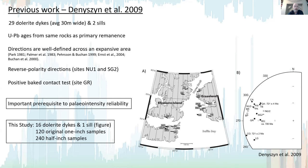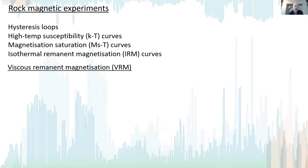The samples include reverse polarity directions and a positive baked contact test, which are all important prerequisites for paleointensity reliability. This study focuses on 16 dolerite dikes and one sill. We obtained 120 of the original one-inch samples, which we cut in half to produce 240 half-inch samples.